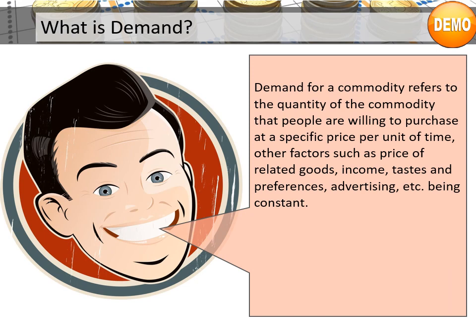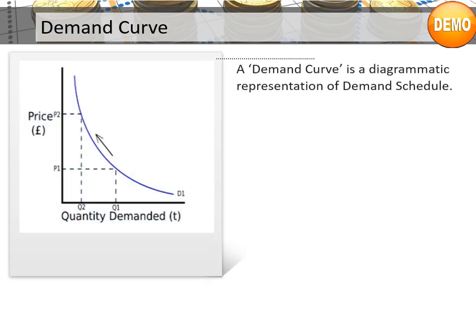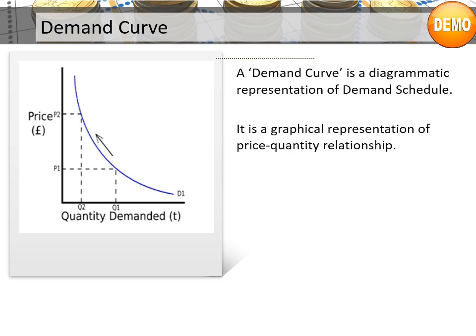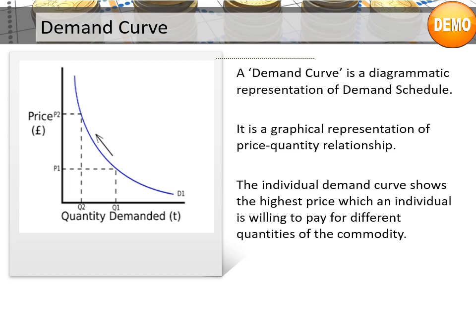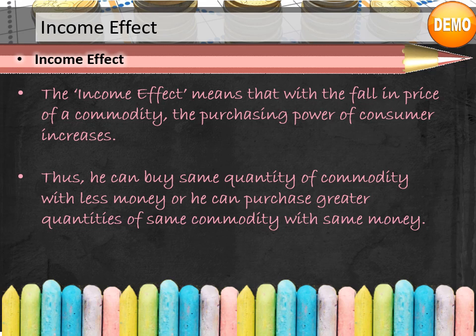Demand for a commodity refers to the quantity of the commodity that people are willing to purchase at a specific price per unit of time, with other factors such as price of related goods, income, tastes and preferences, and advertising being constant. Demand includes the desire to buy the commodity accompanied by the willingness to buy it and sufficient purchasing power to purchase it. A demand curve is a diagrammatic representation of demand schedule — a graphical representation of price-quantity relationship. The individual demand curve shows the highest price which an individual is willing to pay for different quantities of the commodity. The income effect means that with the fall in price of a commodity, the purchasing power of consumers increases. Thus, he can buy the same quantity of commodity with less money, or purchase greater quantities of the same commodity with the same money.